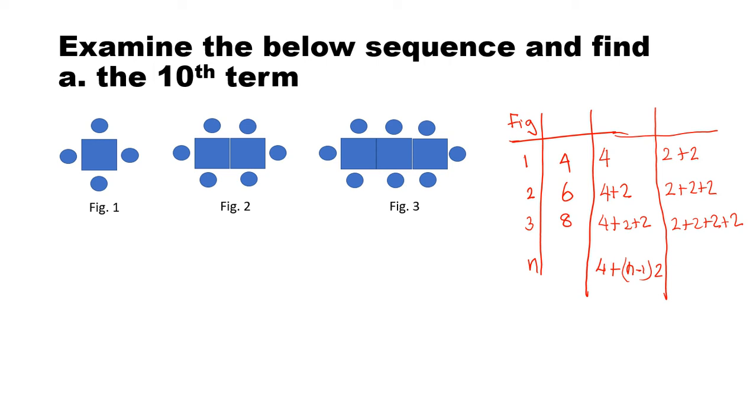Now, let's see what we get here. First figure has 2 plus 2. And second figure has 2 plus 2 plus 2. And third figure has 2 plus 2 plus 2 plus 2. So how many times 2's are here? 4 times 2, 3 times 2 and 2 times 2. But that is always 1 plus the figure number. So in this case, it will be n plus 1 times 2.